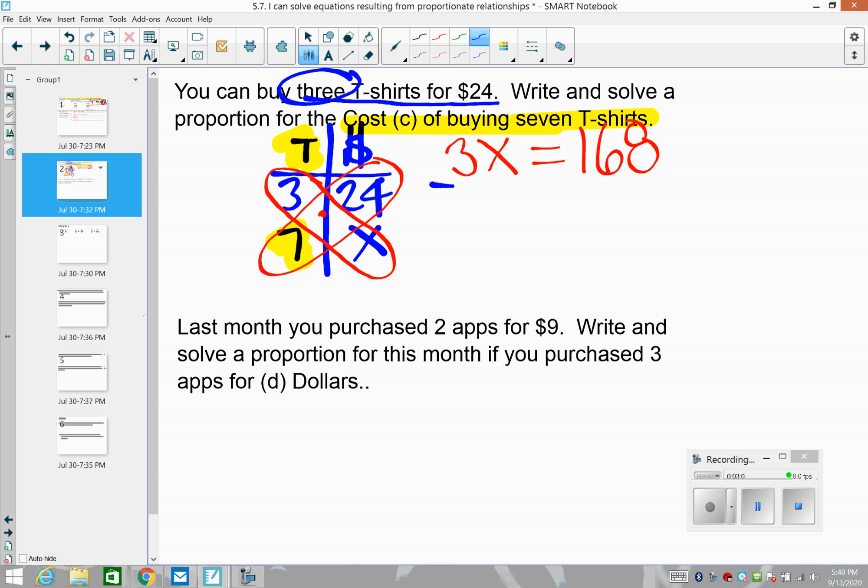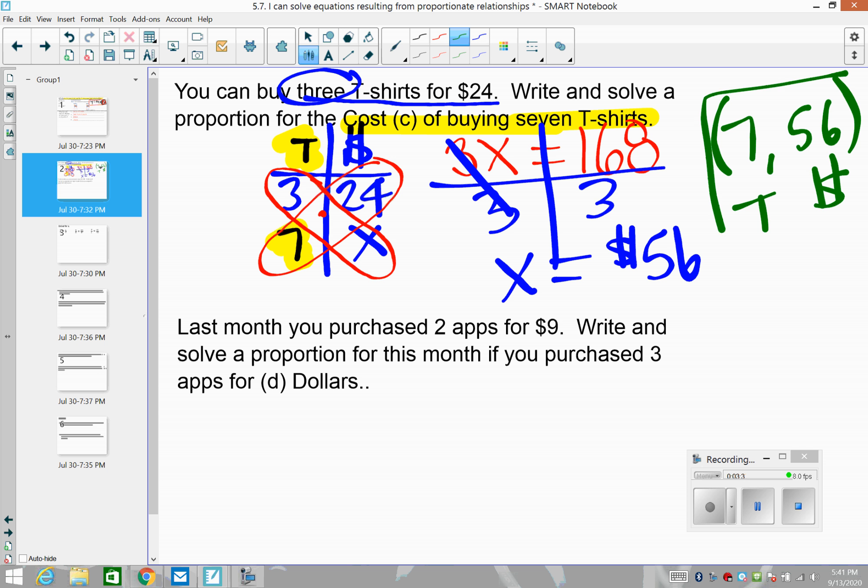So that is seven times 24 is 168. Now from that point on, we're going to build house, build fence, clean yard, clean yard, which we've done a million times. So we would say that X is equal to 168 divided by three is $56, which is what some of you already got in your head. So we're saying that seven t-shirts we figured out was $56. So that's called setting up a T table and taking cross products.